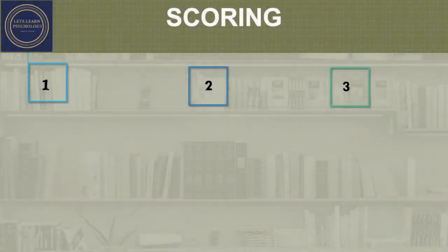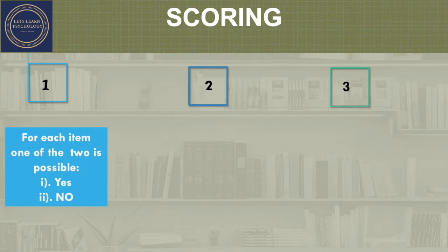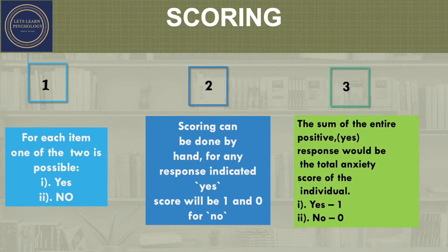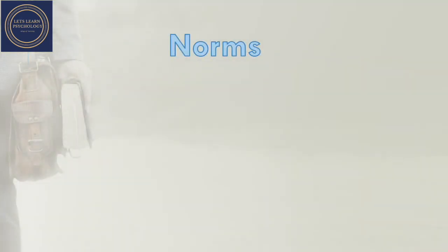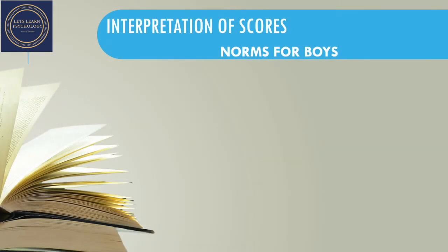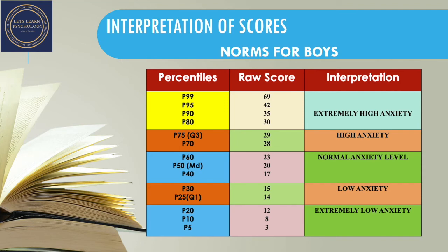Now let's talk about scoring. Scoring is very simple — every 'yes' is given one mark and every 'no' is given zero. After marking all 90 questions, we total up all the 'yes' responses, and that gives us the raw score for this test. The norms for this test were developed on a sample size of 400 — 200 boys and 200 girls — who were college-going students. Separate norms for both boys and girls are available.